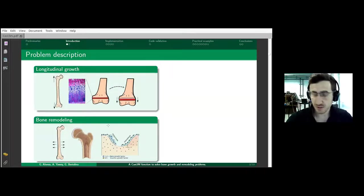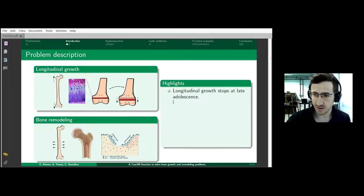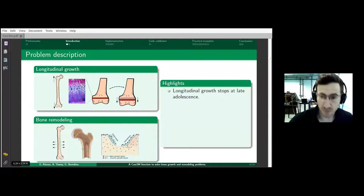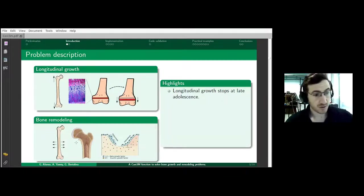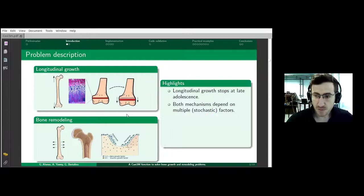There are several differences between these processes. Longitudinal growth stops at late adolescence, when there are no more cells to grow in the epiphyseal plate because they are all ossified. Bone remodeling happens during the whole life.